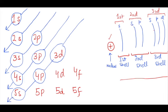There is a little bit of confusion here. After 3p, most students ask why the electron doesn't go into 3d. No — after 3p, the electron will go into 4s, according to the Aufbau principle. Why? Because the 4s subshell is nearer to the nucleus as compared to 3d.